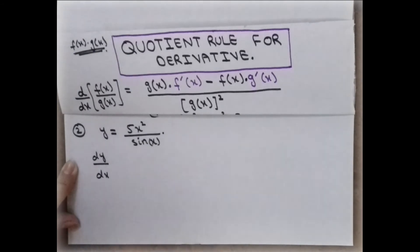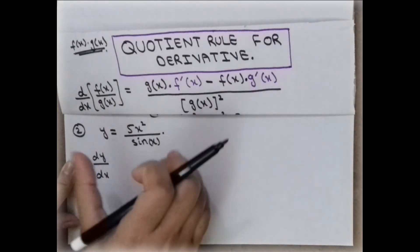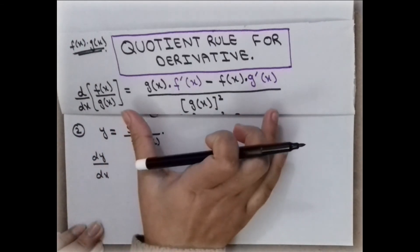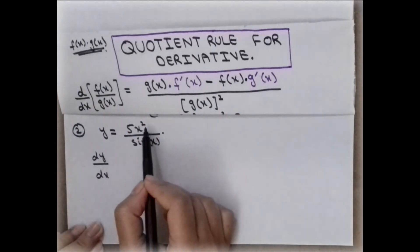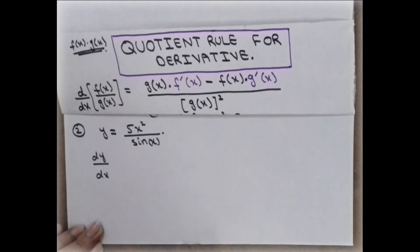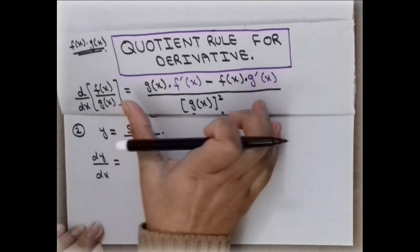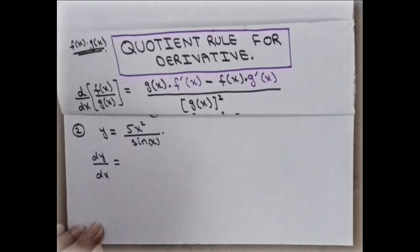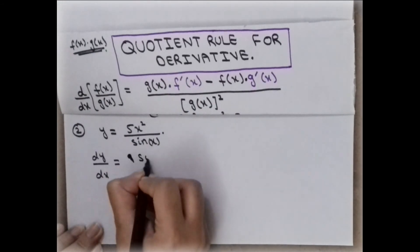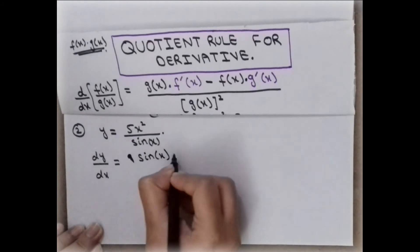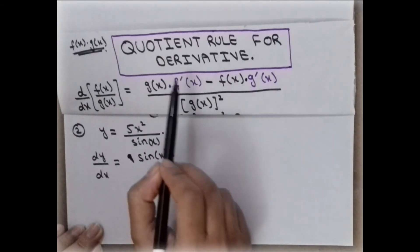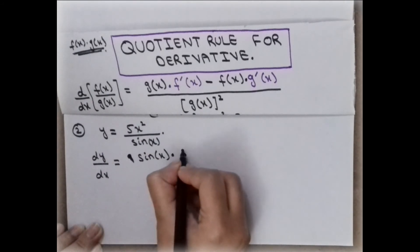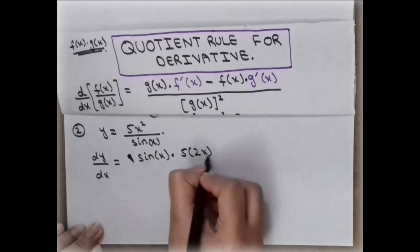Now for the second example, let this be f of x and this be g of x, just for comparison to apply the formula. If you remember the formula, there's no need to label f and g each time. Using the quotient rule: write the denominator sin x, then multiply by the derivative of the upper term 5x squared — by the power rule that gives 5 times 2x, which is 10x.